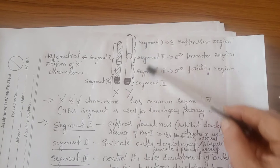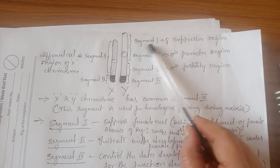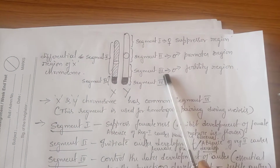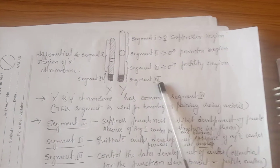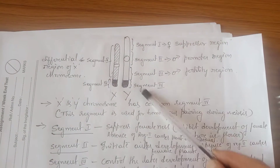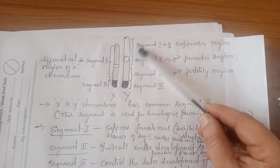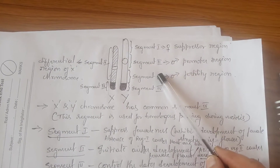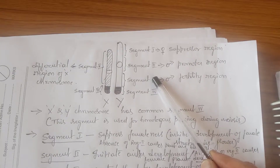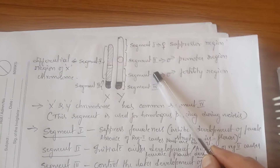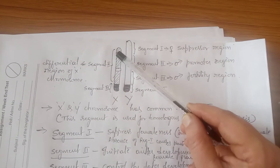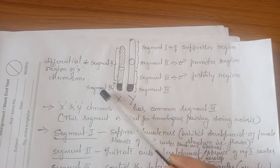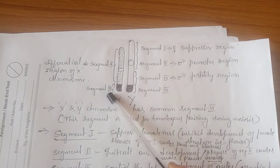The 4 distinct regions on the Y chromosome are called region 1, region 2, region 3, and region 4. Of these 4 segments, 3 regions play a very important role in sex determination and male fertility. On the X chromosome, there are only 2 regions, called region 5 and region 4.